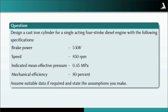Brake power: 5 kilowatts. Speed: 850 RPM. Indicated mean effective pressure: 0.45 MPa. Mechanical efficiency: 80%. Assume suitable data if required and state the assumptions you make.